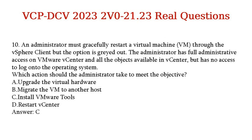Question 10. An administrator must gracefully restart a virtual machine (VM) through the vSphere client, but the option is grayed out. The administrator has full administrative access on VMware vCenter and all objects available in vCenter, but has no access to log onto the operating system. Which action should the administrator take to meet the objective? A. Upgrade the virtual hardware. B. Migrate the VM to another host. C. Install VMware Tools. D. Restart vCenter. Answer: C.